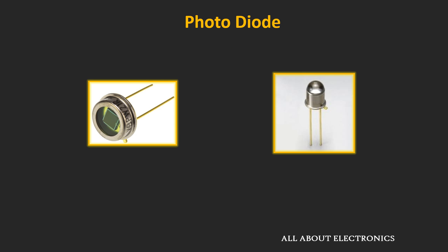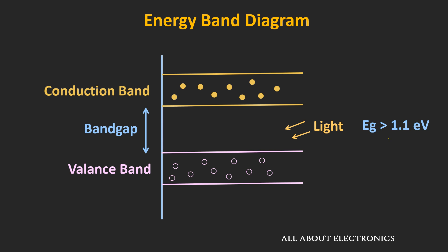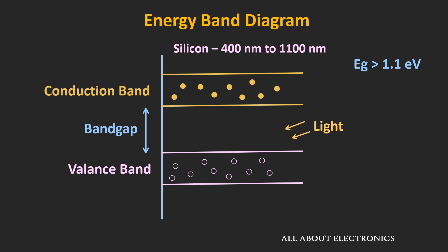Unlike the p-n junction diode, the active area of the photodiode is kept transparent so that it can accept incident light. To generate the photocurrent, the energy of the incident photon should be sufficient enough. For the silicon photodiode, the energy of the photon should be greater than 1.1 eV — that means greater than the band gap energy — so that the incident light can generate electron-hole pairs. The wavelength of the incident photon should be between 400nm and 1100nm.